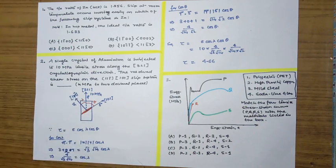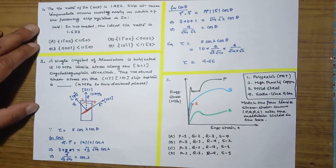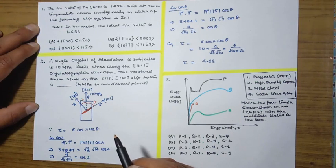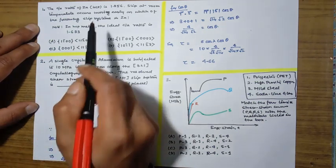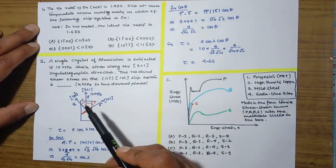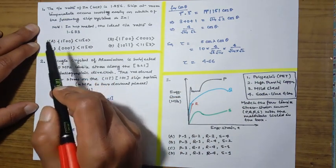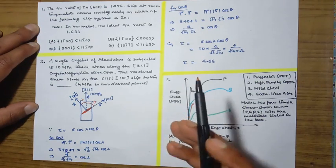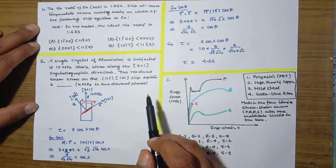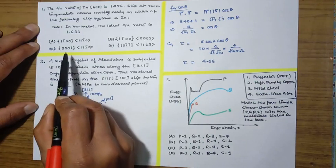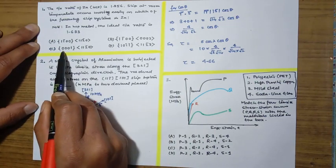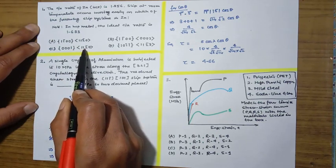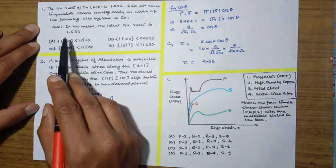The first question: the c/a ratio of zinc, which has an HCP structure, is 1.856. Slip at room temperature occurs most easily on which of the following slip systems? In an HCP metal, the ideal c/a ratio is 1.633. Since the c/a ratio of zinc (1.856) is greater than the ideal value, slip occurs on the basal plane. The basal plane is (0001) and the direction is [11̄20].